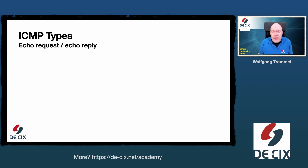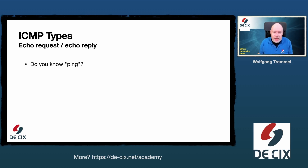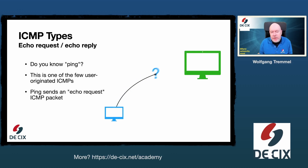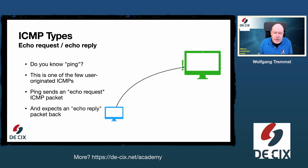Another ICMP type is the echo request and echo reply. Do you know the command-line tool ping? This is one of the few user-originated ICMP packets. Ping sends out an echo request ICMP packet, which is then answered by another ICMP packet called echo reply.